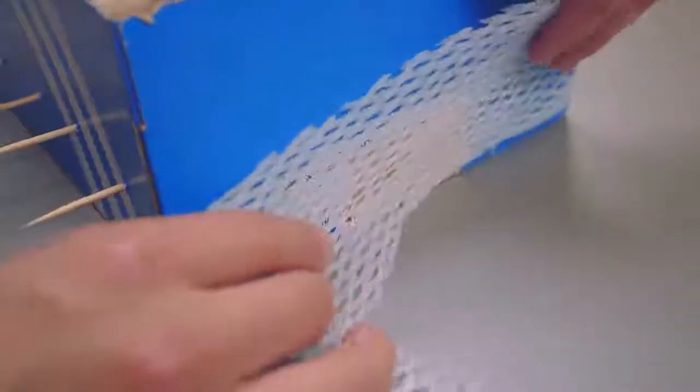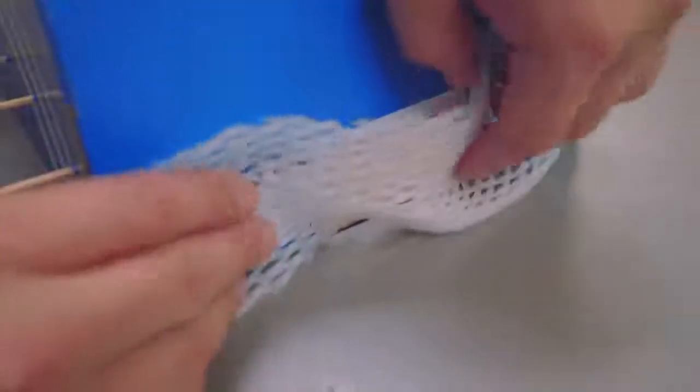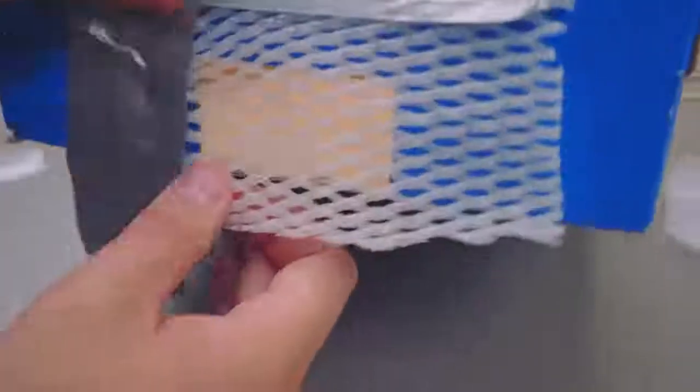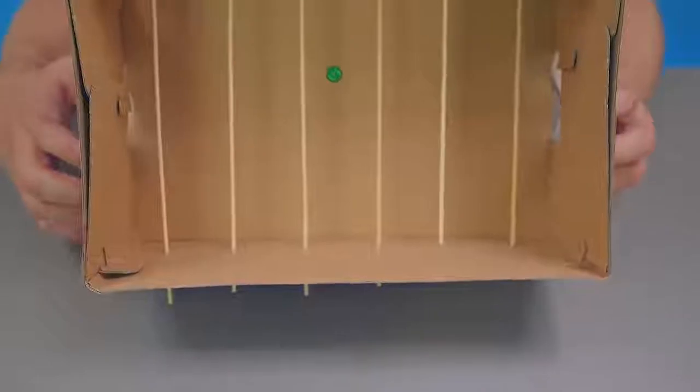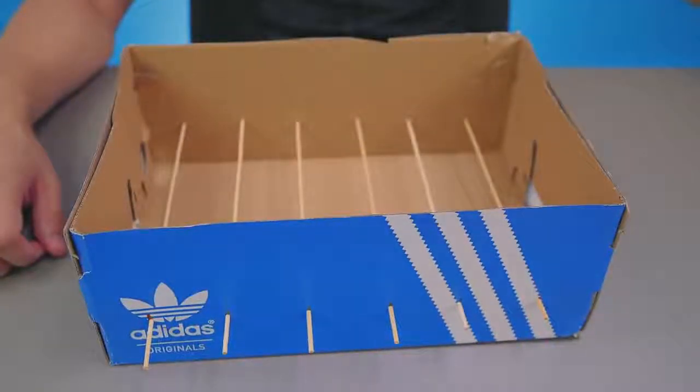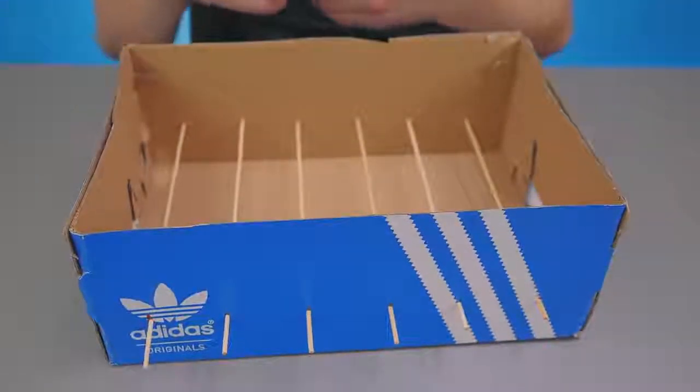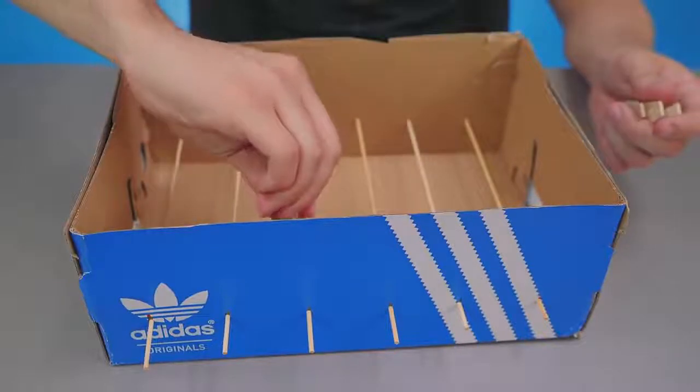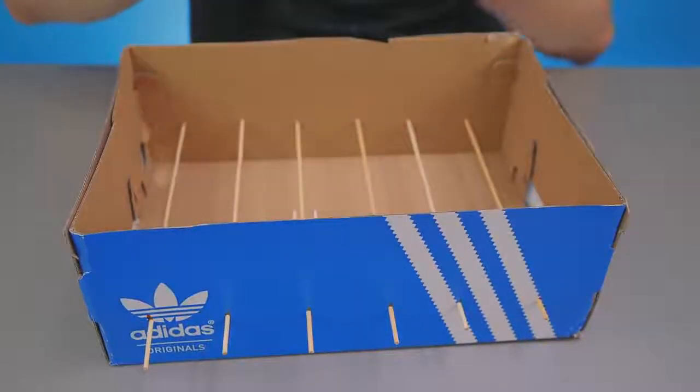Cut the pre-arranged piece of net in two parts, put it on the holes in the box and fix it with duct tape. Well, the field is ready but where are the players? The clothes pins will play this part. We will need 12 of them. Put them on the wooden sticks like on the screen.